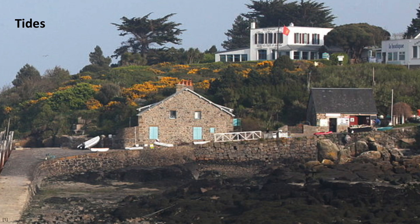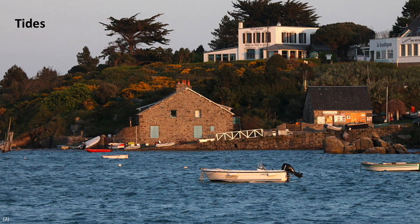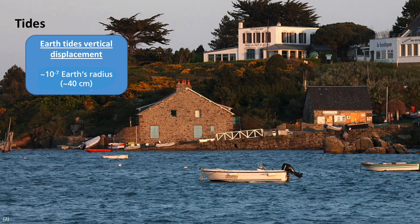Ocean tides are a well-known phenomenon that everybody may experience who stays at a coast for some days. The sea level is rising and falling in a mainly semi-diurnal rhythm. The solid earth undergoes tides as well, with a vertical displacement of around 40 cm at mid-latitudes. This is at the order of 10 to the power of minus 7 of the earth's radius. Both phenomena have the same driving forces: the gravitational fields of the moon, the sun and, to a minor degree, of the planets.